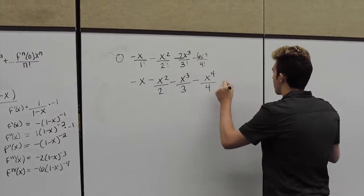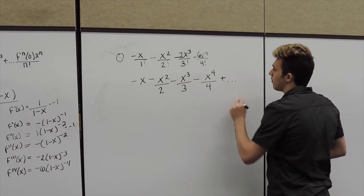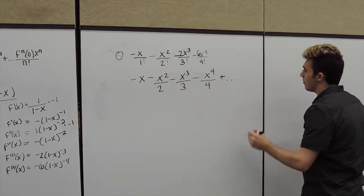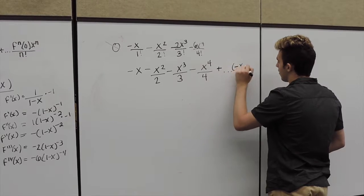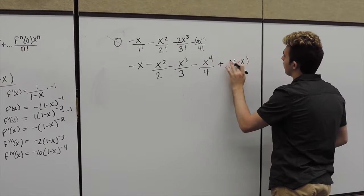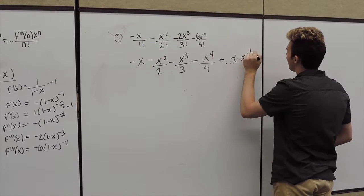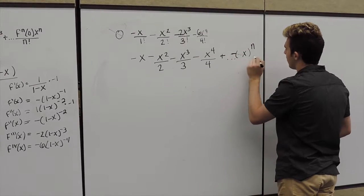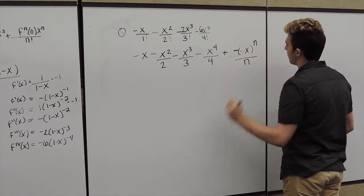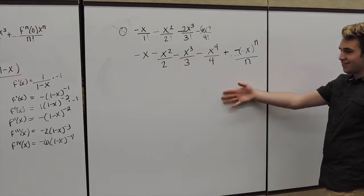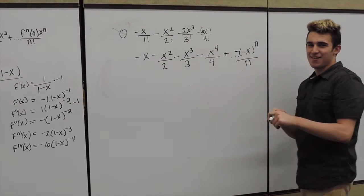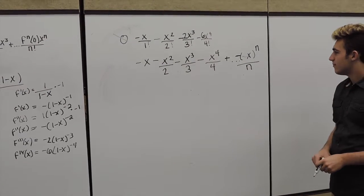Alright, and then for our general term, you guys can just see the pattern. We have our negative x to the n over n.